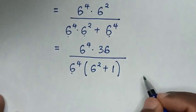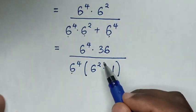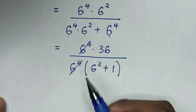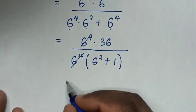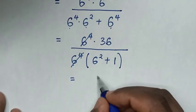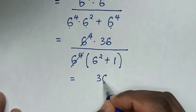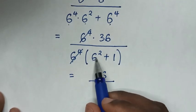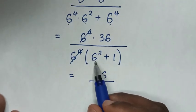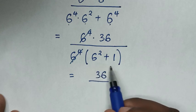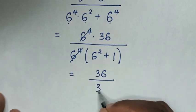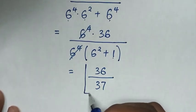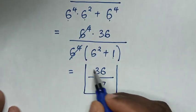Then in the next step, to simplify, this 6 power of 4 will cancel with this 6 power of 4. So it will be 36 over 6 squared is 36, and 36 plus 1 is 37. Therefore, this is our final answer.